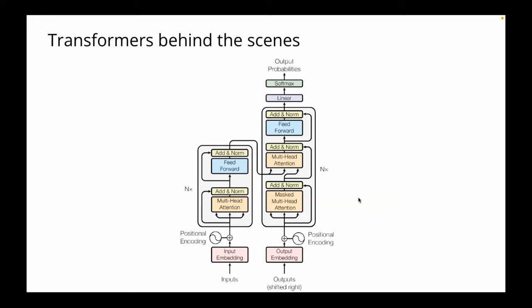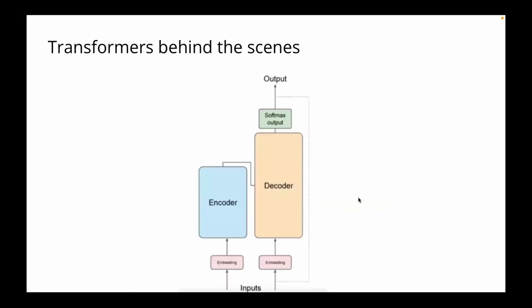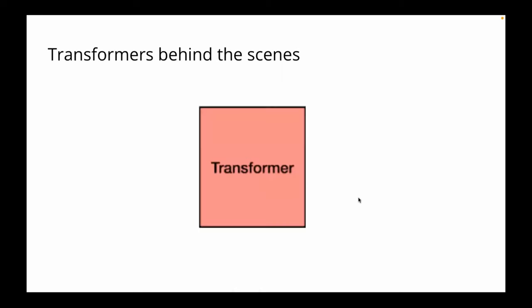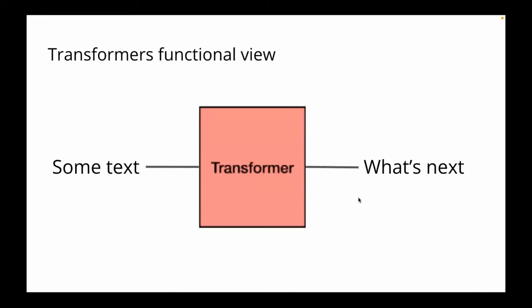If we take a behind-the-scenes look, it's basically a specific architecture. But we will take a holistic view — one level up — and it will essentially result in two main blocks: encoder and decoder, with a set of inputs and outputs together with matrix multiplications in between. Go one level higher again and it's just one red box called transformer. From a functional view, you feed in a bunch of text and it tries to predict what's next, capturing its contextual meaning.